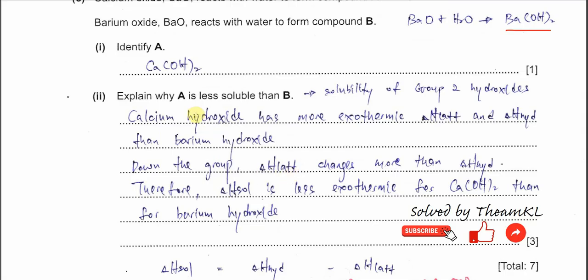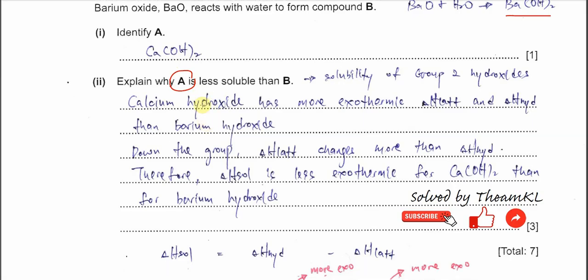If we want to focus more on calcium hydroxide specifically, we can slightly adjust the explanation but the meaning is the same. The solubility of calcium hydroxide is lower because the enthalpy change of solution is less exothermic or more endothermic. The factor that affects this is still lattice energy and hydration enthalpy — down the group, the lattice energy change is greater than the hydration enthalpy change.